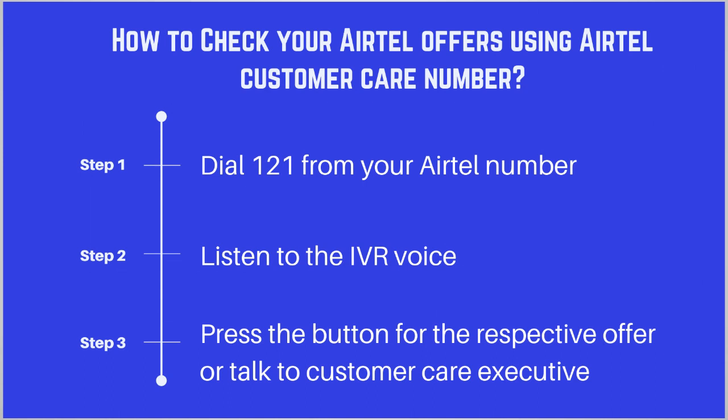The third and final method is how to check your Airtel offers using the Airtel customer care number. The first step is dial 121 from your Airtel number. The second step is listen to the IVR voice. The third and final step is press the button for the respective offer or talk directly to the customer care executive.